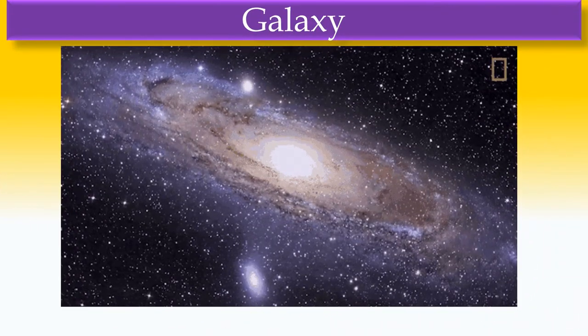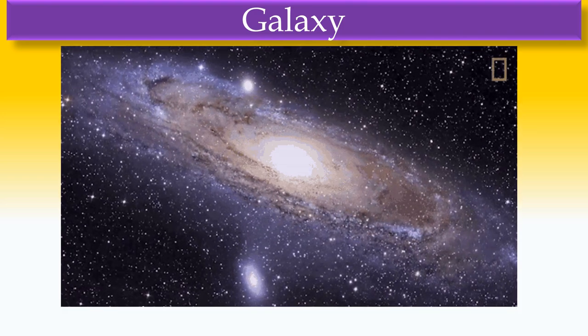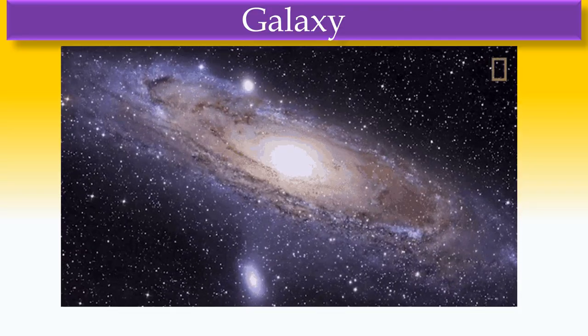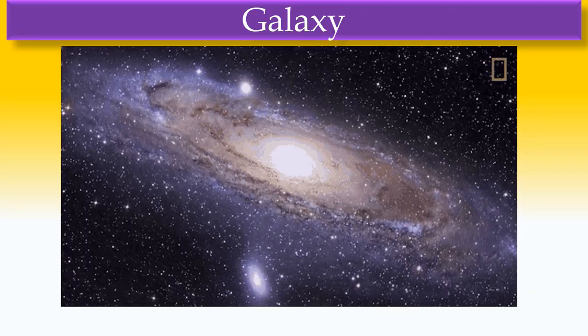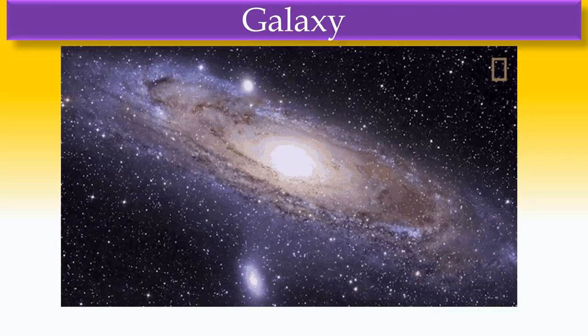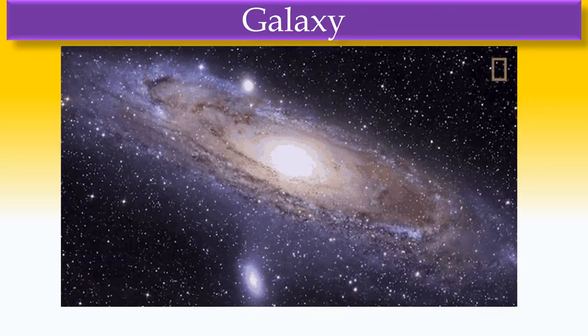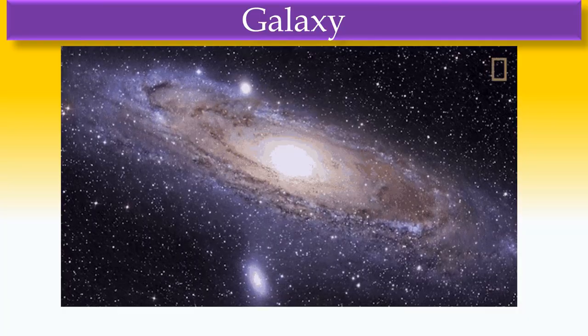Now let us see about galaxies. Many stars come together and form a galaxy. Here, every white dot represents a star. This is our Milky Way galaxy, and our Sun resides in the Milky Way galaxy. Similarly, there are millions of galaxies in our universe.